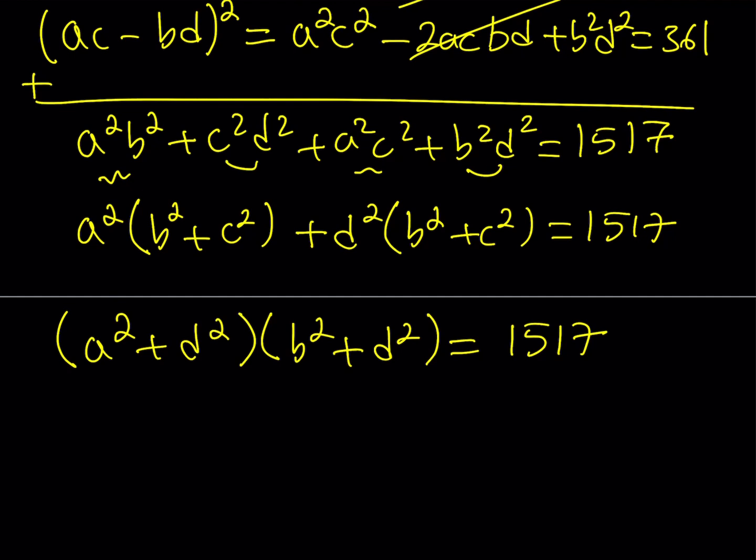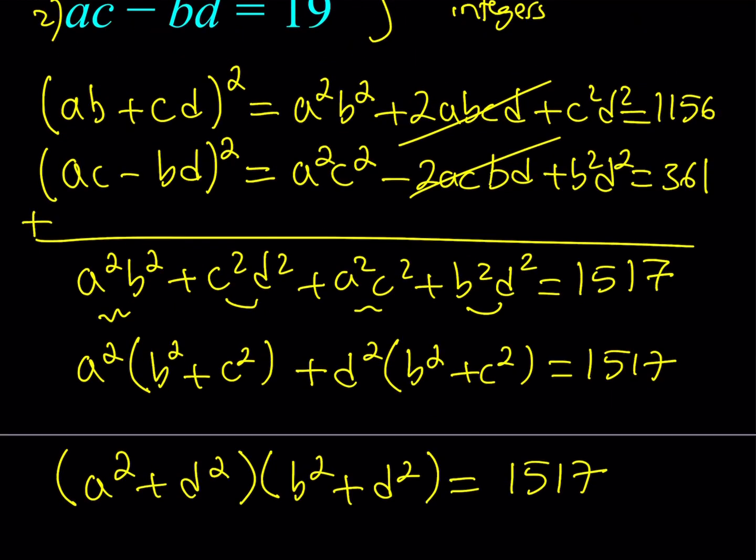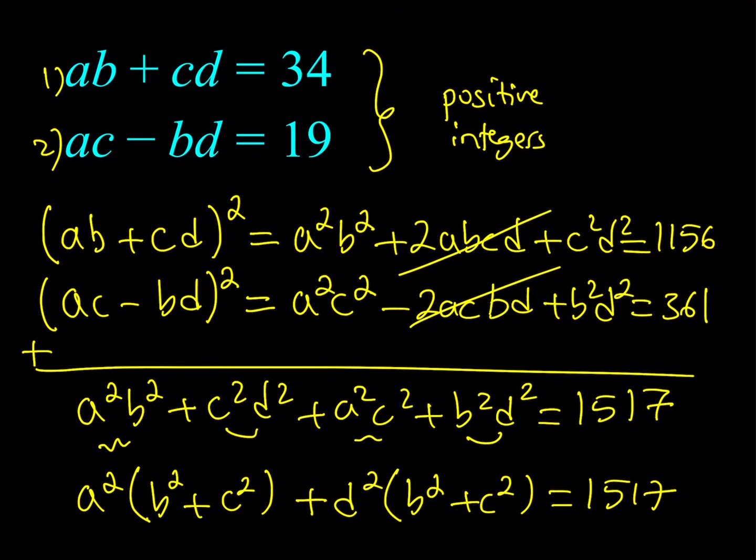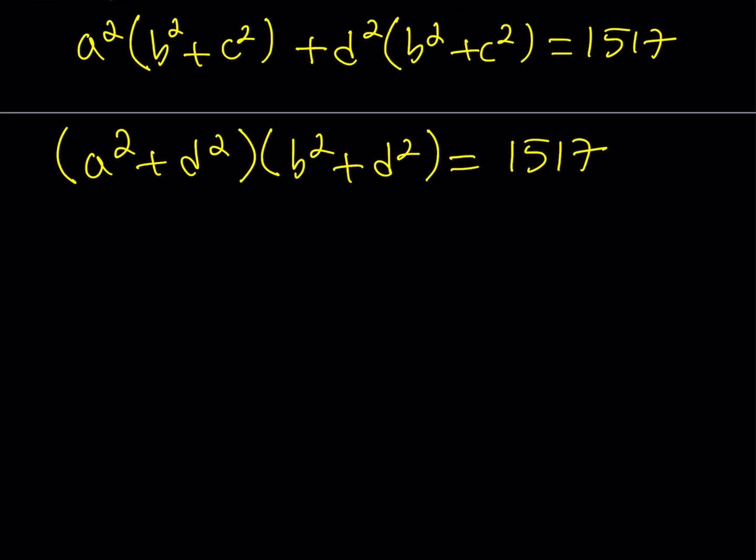We started off with two equations. That was a system. That was the original problem. We squared both sides, so you need to be careful because when you square both sides, certain things become extraneous. Also, we went from two equations to one equation, so we've got to make sure that whichever solutions we find satisfy the original problem.